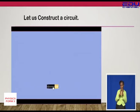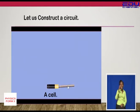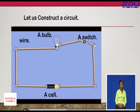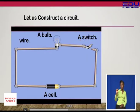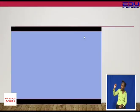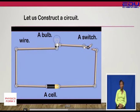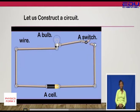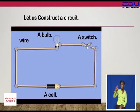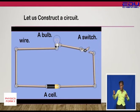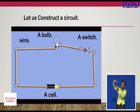Let us first see what is happening here. We are going to look at the construction of a circuit. You are aware of a circuit, and I've already constructed it for you. We have a switch, a conductor, a battery, and a bulb. Now let's see what would happen when we close the switch and complete the circuit.